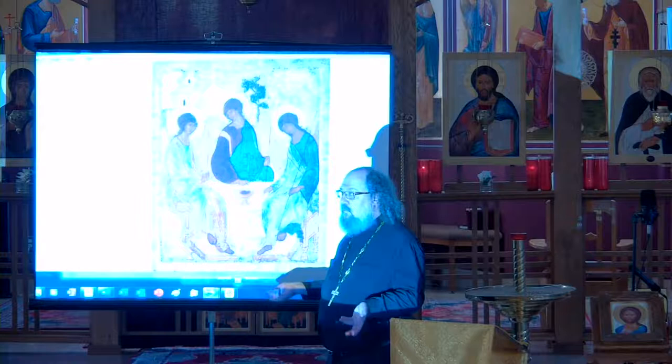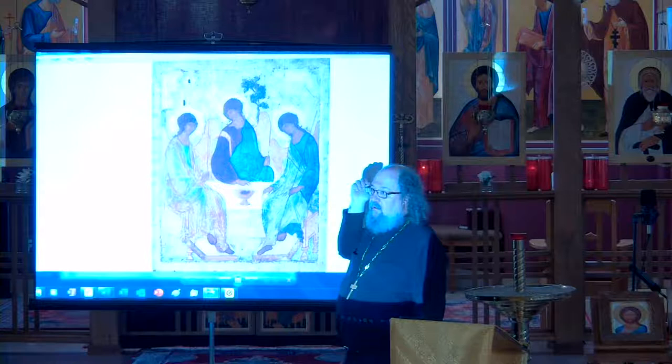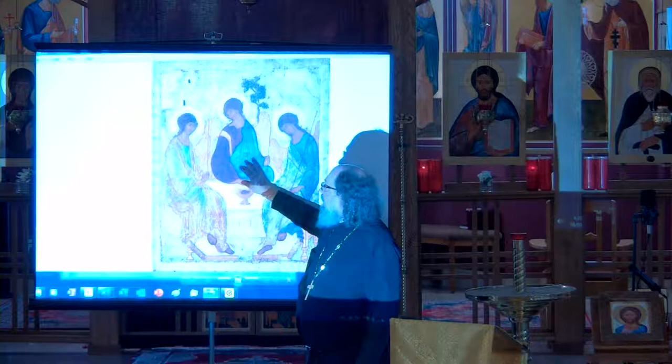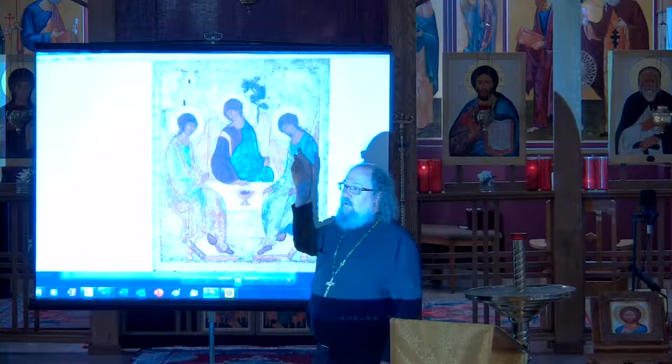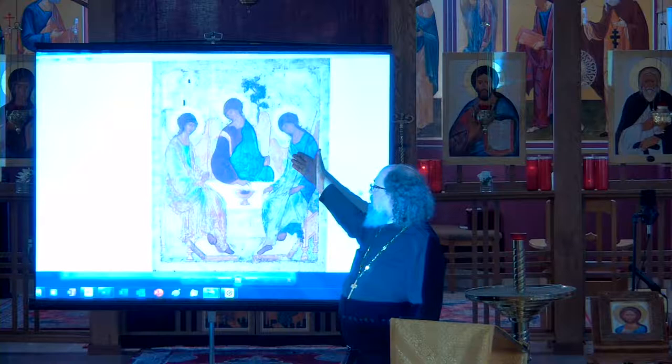Above God the Father is a building, which refers to a specific symbol. The second figure is typically referred to as Christ, almost always represented in blue on the outside. He sits in the center, and behind him is a tree — the tree of the cross.